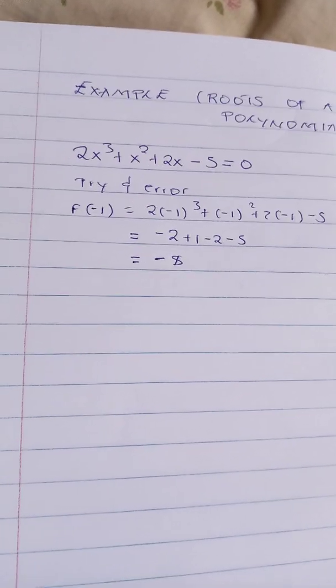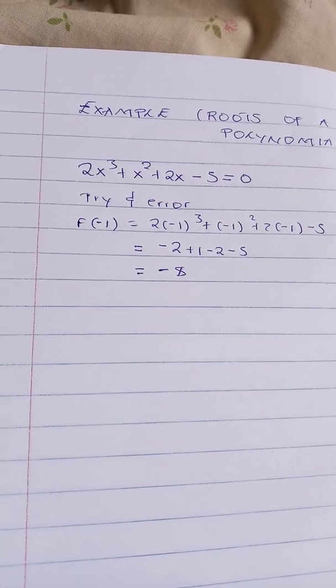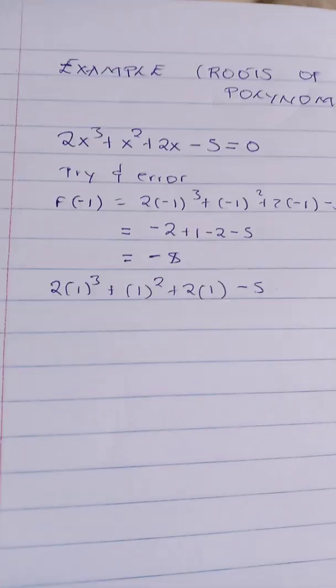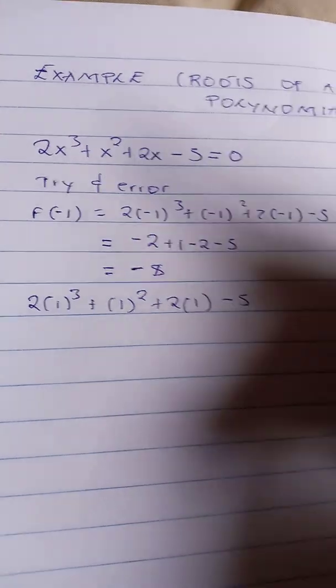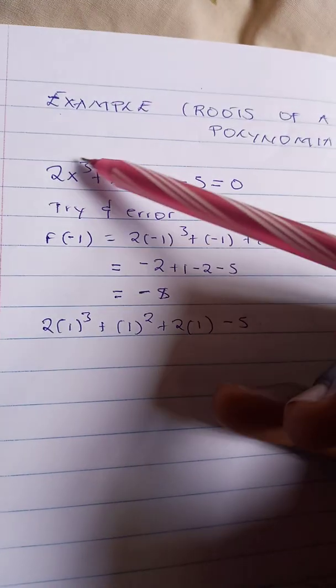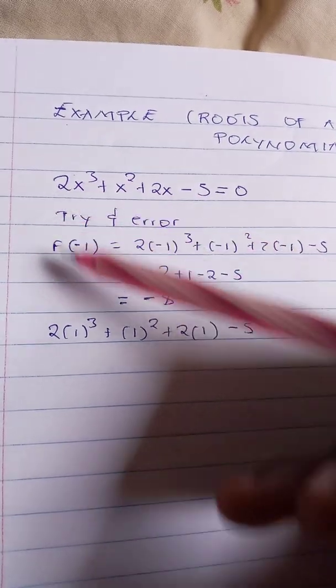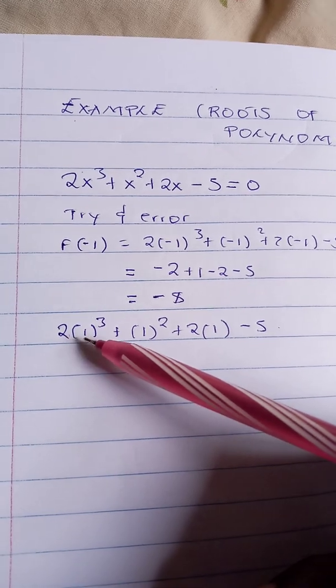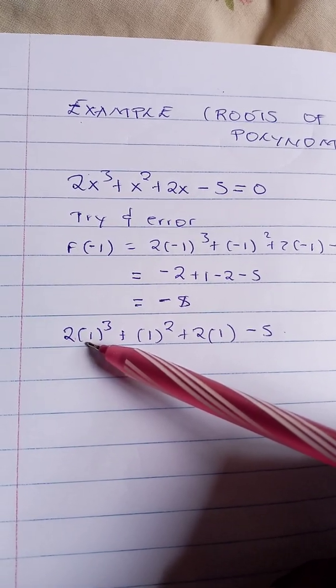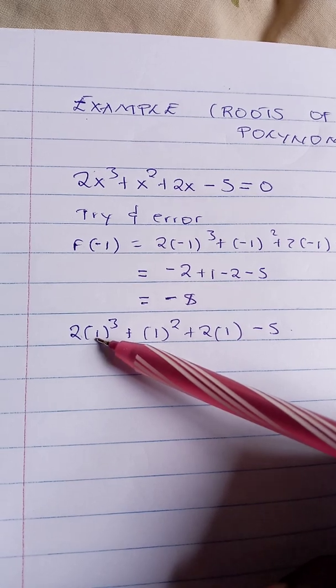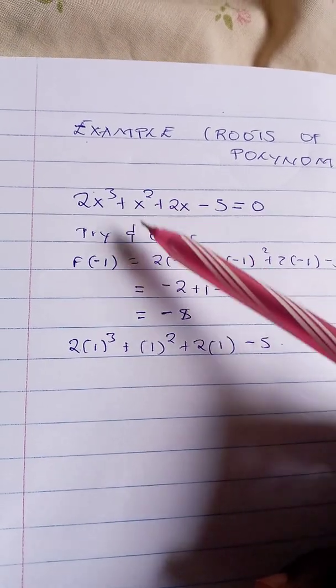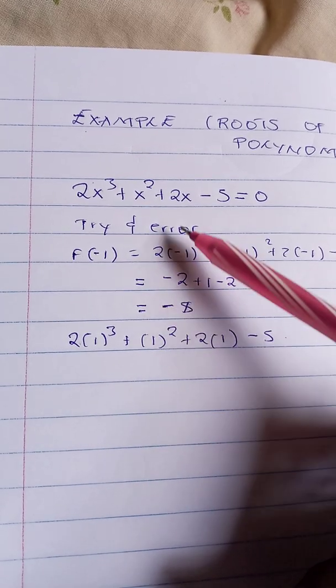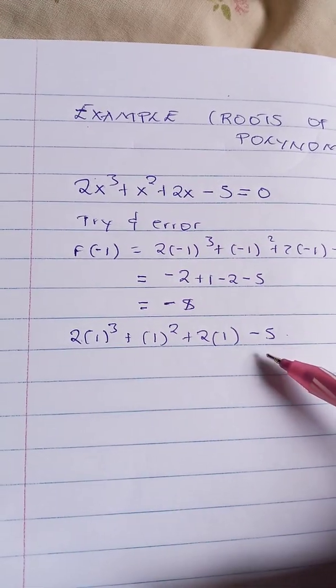You can continue trying out other values. Let's try out positive 1 also. In case you don't know where we are getting the function, we're just getting the given function. In this case, where there is x, we put the assumed factor, so we try out 1. Where is x, put the ones.